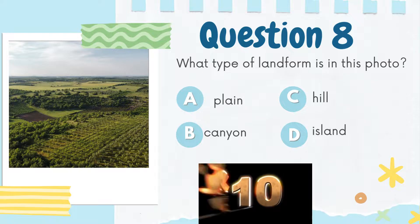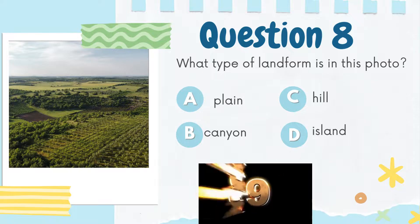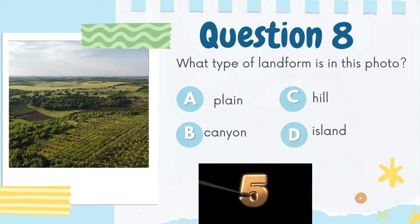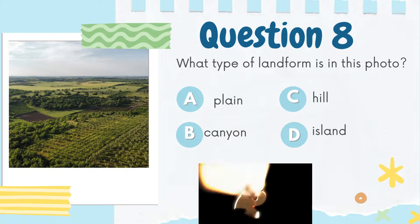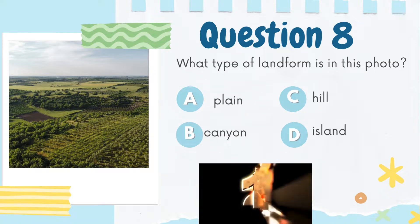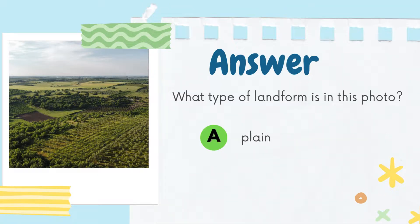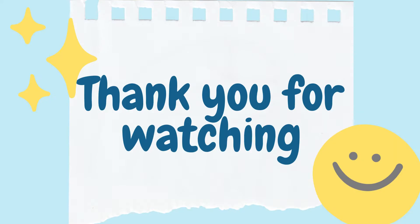Here is your question number 8. What type of landform is in this photo? Option A: Plain. Option B: Canyon. Option C: Hill. Option D: Island. The correct answer is Option A: Plain. Thank you for watching.